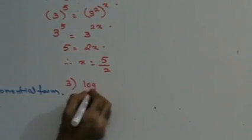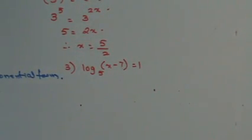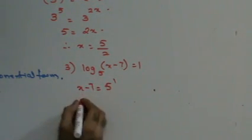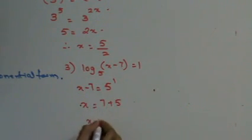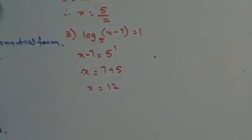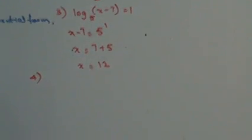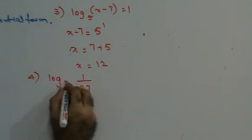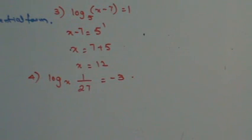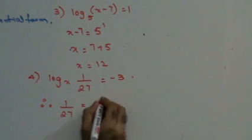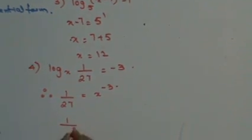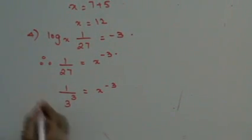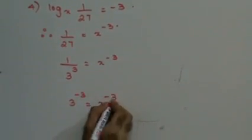Suppose if I have log (x minus 7) to the base 5 is 1. This can be written as x minus 7 is 5 raised to 1. So x is 7 plus 5, x is equal to 12. Next: log of 1 upon 27 to the base x is minus 3. In exponential form, 1 upon 27 is x raised to minus 3. Since 1 upon 27 is 3 cubed, and bringing from denominator to numerator changes the sign, I get 3 raised to minus 3 is x raised to minus 3. Hence x is 3.